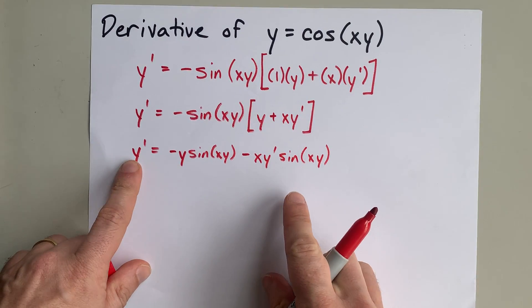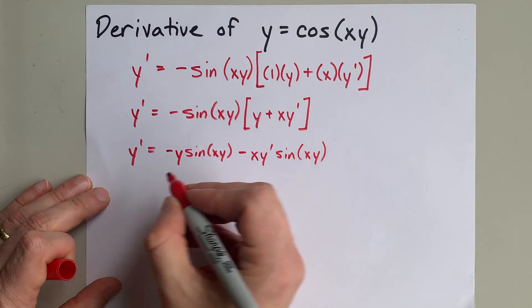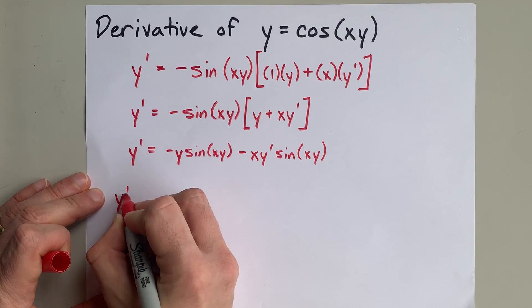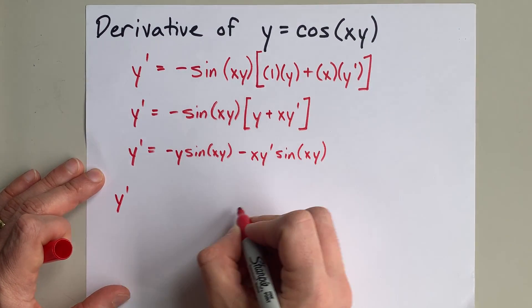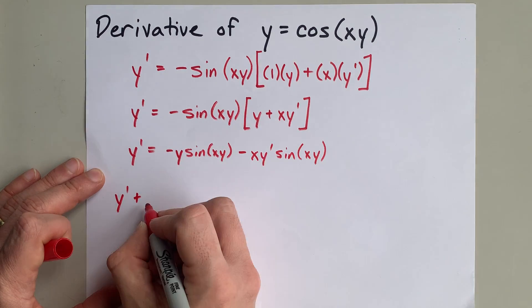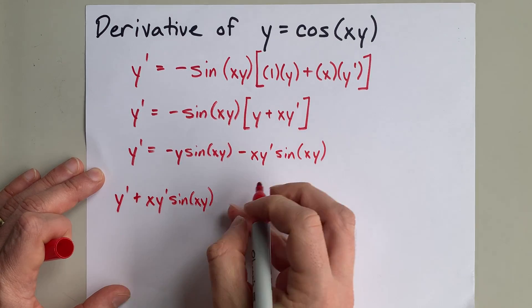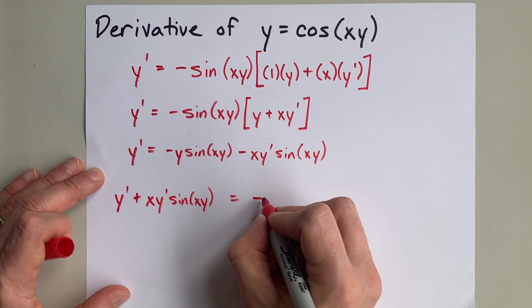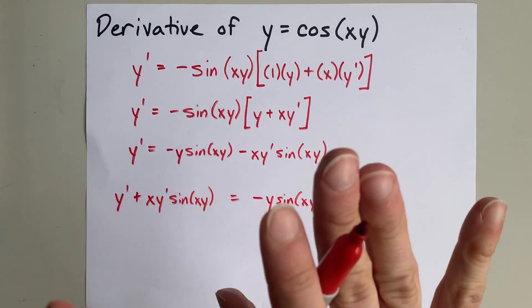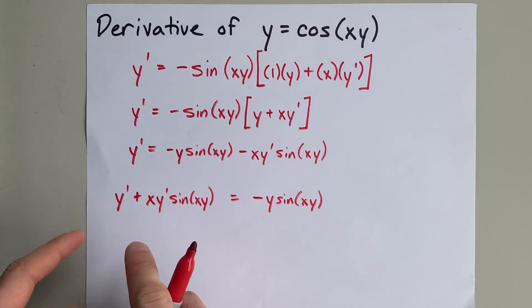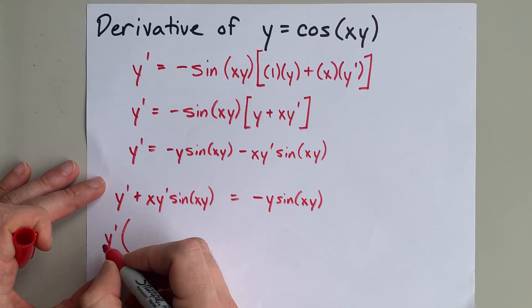This term and this term both have y prime in it, so I'm going to combine them on the other side, like the left side here. I got my y prime. Minus x y prime sine xy can move to the other side and become plus x y prime sine xy. The right-hand side is still negative y sine xy. The point was both of these terms have y prime in it, and I can factor y prime out of it.